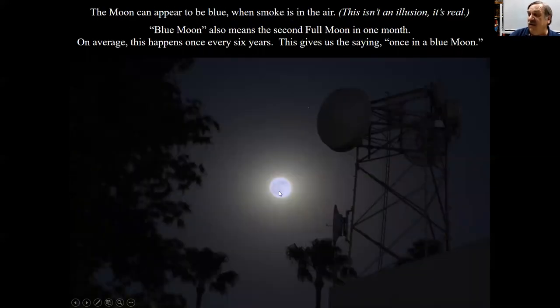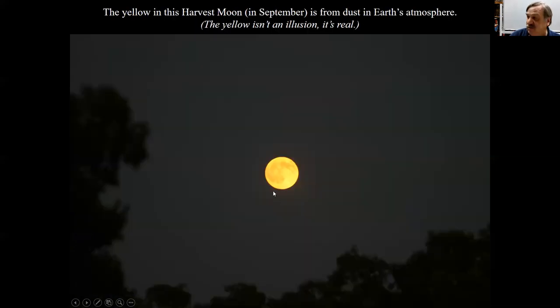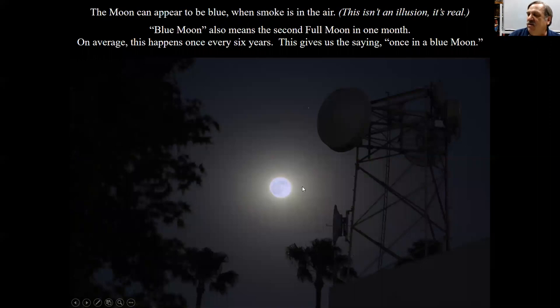The moon can appear to be blue when there is smoke in the air. Dust absorbs light, particularly violet and blue light, therefore making things look redder than they should look, therefore an overall yellow moon. The moon can also appear to be blue by smoke high up in the air from forest fires. Again, this is not an illusion. It's real. Blue moon also means the second full moon in one month. On average, this happens once every six years. This gives us the saying, once in a blue moon. When the moon is actually blue because of smoke high up in the air, we hope would be rare.